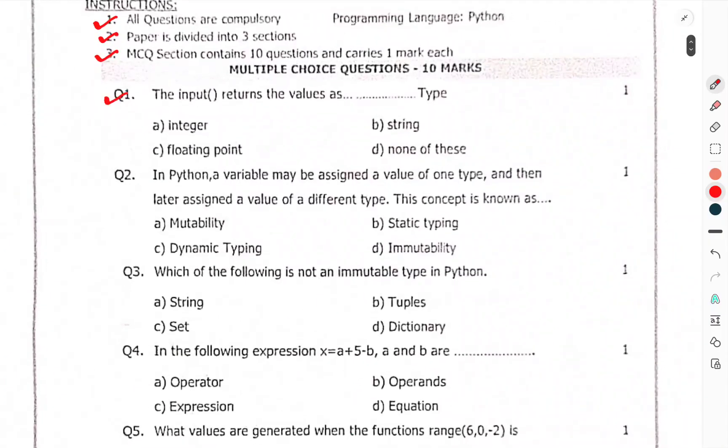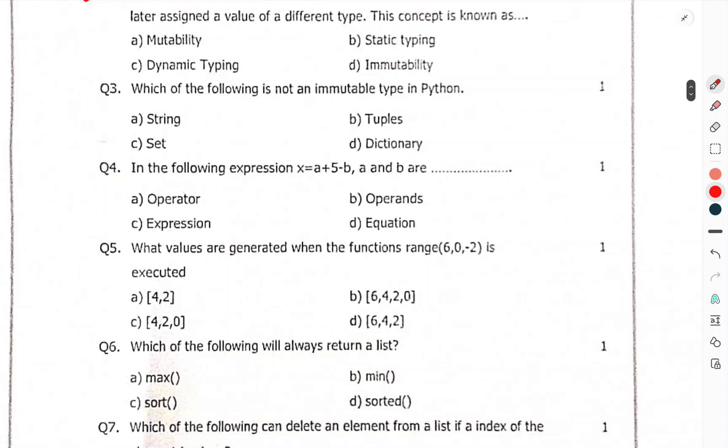The input returns the values as... correct option you have to choose in Python. In Python, a variable may be assigned a value of one type and then later assigned a value of different type. This concept is known as... Question 3: